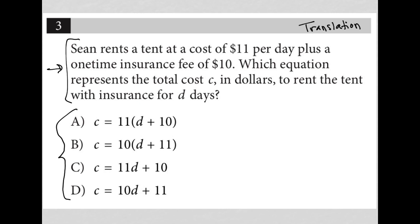All right. So we know the cost is $11, but that's per day. So that'll be 11 times the number of days. So I'll say 11D plus the one-time insurance fee is going to be plus the $10 that only happens one time. It's not per day. So it's a standalone value.